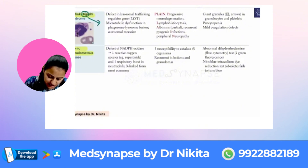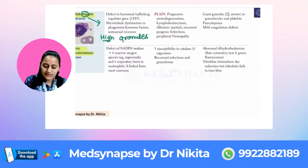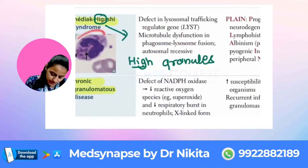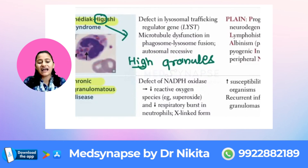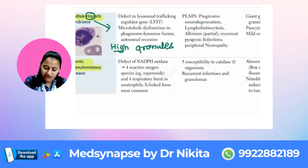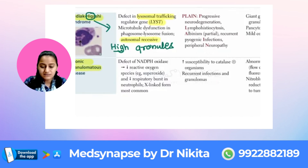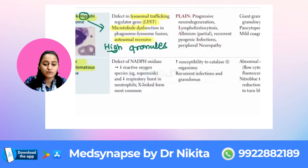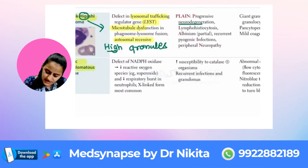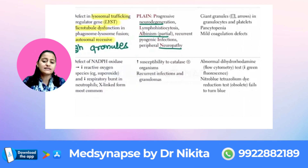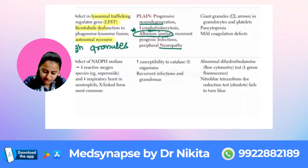Remember that Chediak-Higashi — H-I-G — basically means a high number of granules that you see in Chediak-Higashi. This is a very important image where you see a high number of granules in a cell — that is Chediak-Higashi. Why are there so many granules? Because the trafficking is affected — the lysosomal trafficking LYST gene is affected. This is autosomal recessive and involves microtubule dysfunction. Because the granules are affected, it impacts multiple cell types including nerve cells and melanocytes, causing neuropathy and albinism.